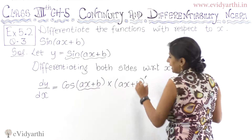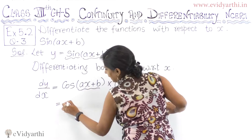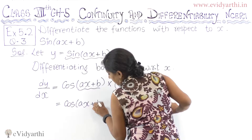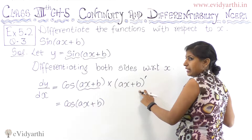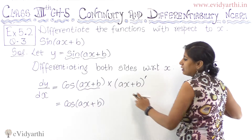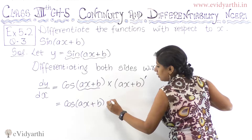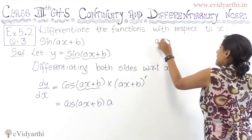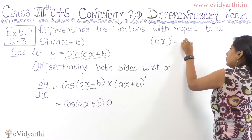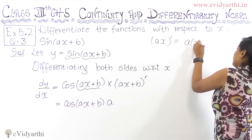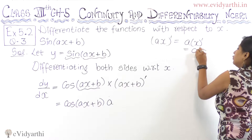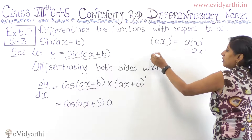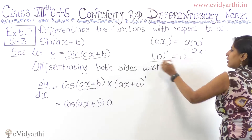Now, what is the derivative of ax + b? B is constant so its derivative is 0. A is constant multiplied by x, so the derivative of ax is a times 1, which equals a.